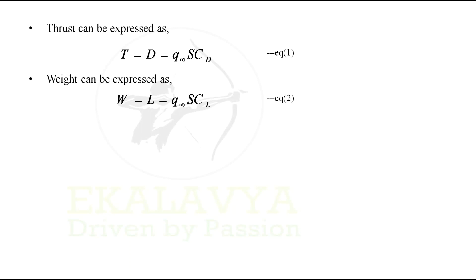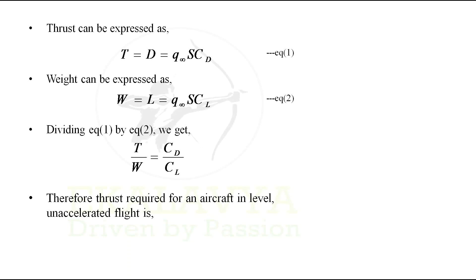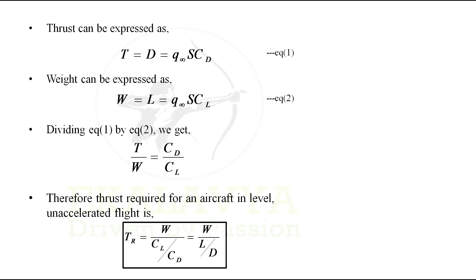Dividing Equation 1 by Equation 2, we get thrust divided by weight equals coefficient of drag divided by coefficient of lift. Rearranging and sending weight to the left-hand side, the thrust required for an aircraft in level unaccelerated flight is: Thrust Required = Weight / (CL / CD), which can also be expressed as Weight / (Lift / Drag).